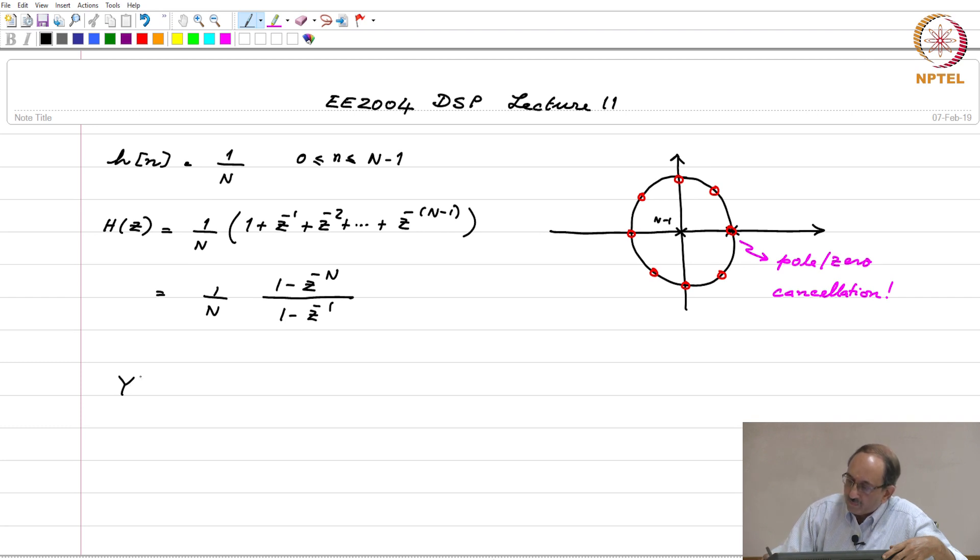h of z is after all y of z by x of z. We have not formally introduced the notion of transfer function yet, but this is similar to what was happening in the Laplace transform case, where you have h of s is nothing but y of s over x of s.